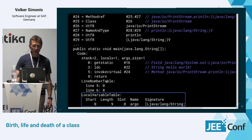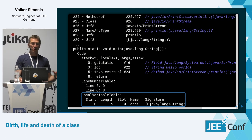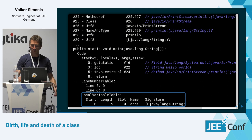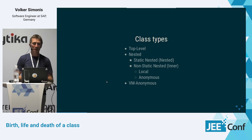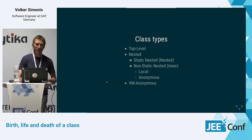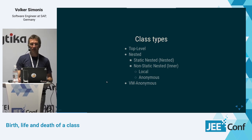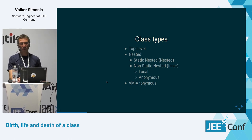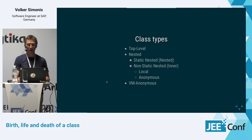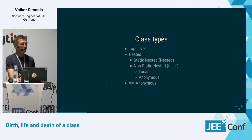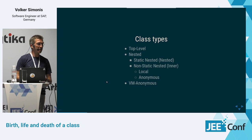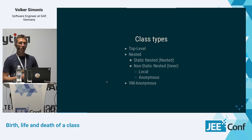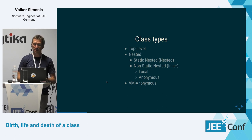We also have the local variable table, used for debugging and to hold the scope of local variables. Java has different kinds of classes: top-level classes, nested classes (which can be static nested classes or non-static inner classes), and inner classes have two more variations: local and anonymous classes. Finally there are VM anonymous classes — not really a class type defined by the Java specification, just an implementation detail of HotSpot, but quite interesting.